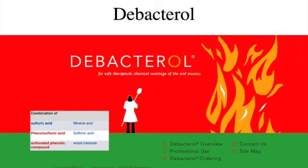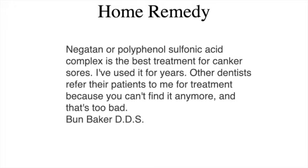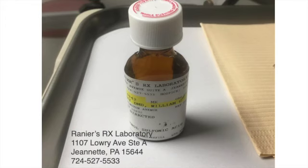My treatment of choice is to chemically cauterize the sore with a product called Debactrol or Negatin. Negatin was offered to me as a solution by Dr. Baker. Here is an example of one formulary pharmacy that will actually make it. Both Debactrol and Negatin are applied using a tiny microbrush directly onto the surface of the sore. It will sting for a few seconds, then turn dark in color, and then about two to three minutes later, the pain is completely gone, and the sore will normally heal in about seven to ten days.